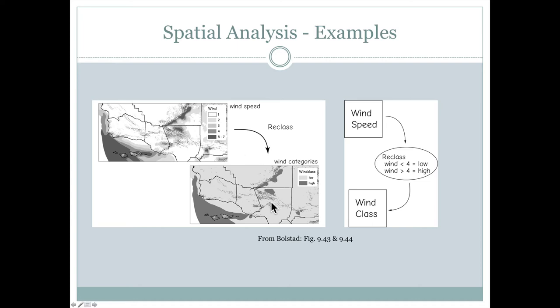And what they've done here is they've broken it into categories. The darker gray represents high wind speeds, and the lighter gray represents low wind speeds.